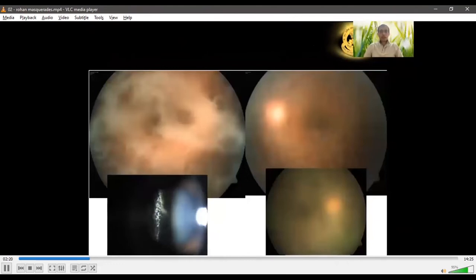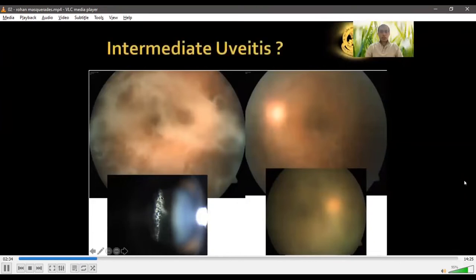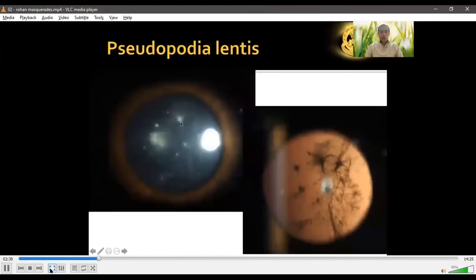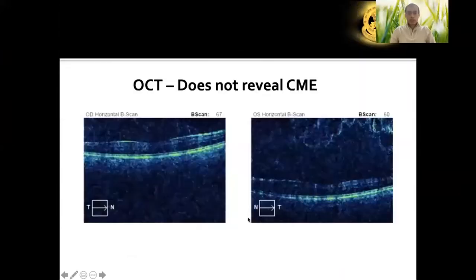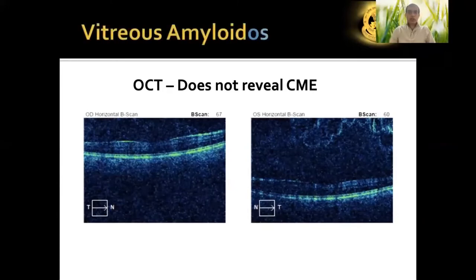Moving to the intermediate segment: hazy vitreous is not always vitritis or intermediate uveitis. Look carefully behind the lens — if you find pseudopodial lentis, this is characteristic of vitreous amyloidosis. These fibril-like attachments to the back of the lens produce vitreous haze, but on OCT there is a lack of CME. Taking history from these patients may reveal other systemic defects and a family history of early deaths. This is actually vitreous amyloidosis mimicking intermediate uveitis.